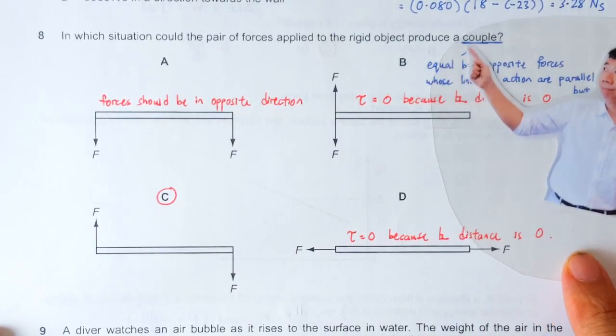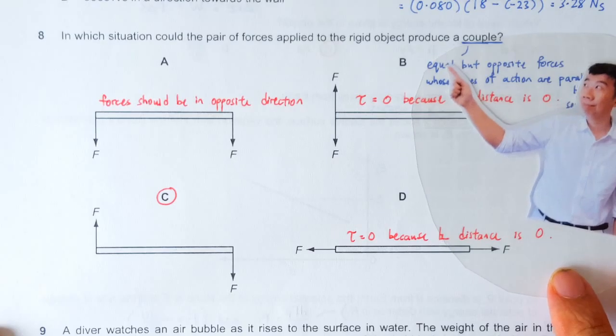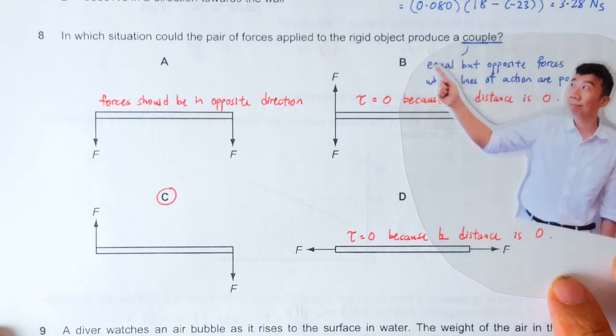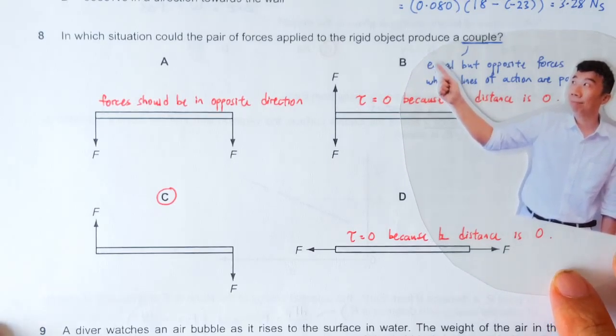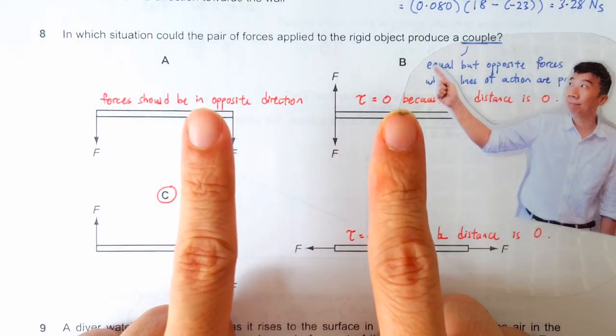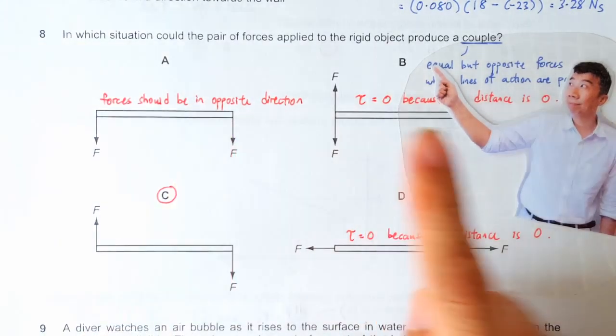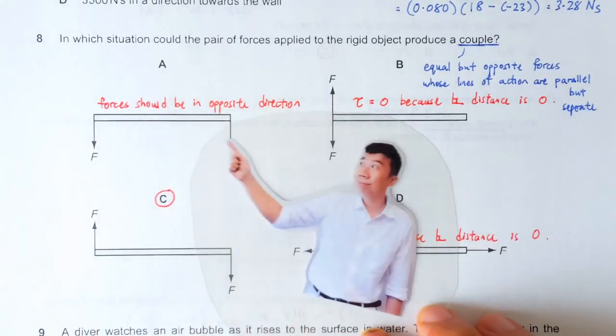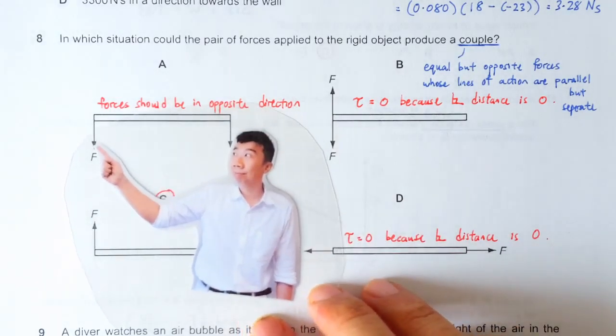To form a couple, we must have two forces equal in magnitude but opposite in direction, and there must be some separation between the two lines of action. This one is wrong because both forces are in the same direction.